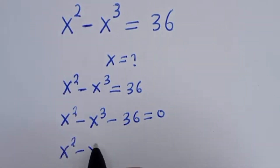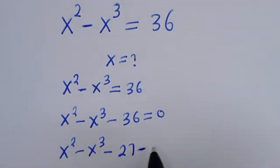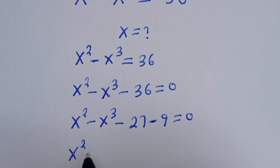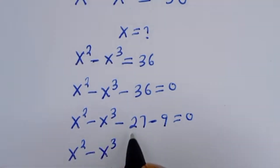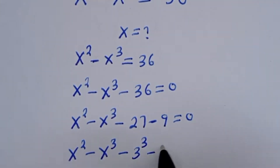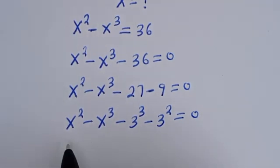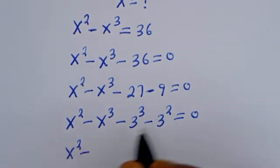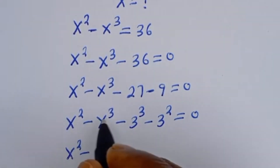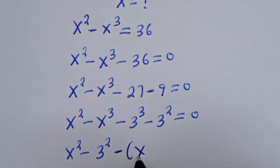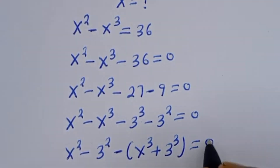S squared minus S to the power of 3 minus 36 can be written as minus 27 minus 9 equals 0. So we have S squared minus S to the power of 3 minus 27, which can be written as minus 3 to the power of 3, then minus 9 written as minus 3 squared, equals 0. Comparing, we have S squared minus 3 squared, then minus bracket S to the power of 3 plus 3 to the power of 3, equals 0.